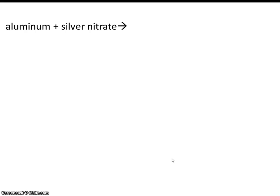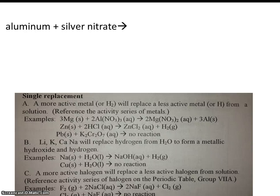Alright, so we have aluminum plus silver nitrate. Now there's three types of single replacement reactions you'll be responsible for memorizing. First, a more active metal, or hydrogen, will replace a less active metal from a solution. Now we've already learned what solutions are. Once again, those are when solids are dissolved in a liquid and the phase is aqueous. So a more active metal replaces a less active metal from the solution.